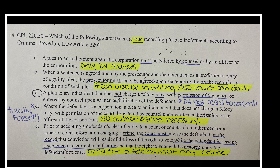Which of the following are true regarding pleas to indictments? A plea to an indictment against a corporation must be answered by counsel only. Where a sentence is agreed upon by the prosecutor and the defendant as a predicate to entry of a guilty plea, the prosecutor must state the agreed-upon sentence orally on the record — but it can also be in writing and the court can also do it, which is why that was wrong. A plea to an indictment that does not charge a felony may, with permission of the court, be entered by counsel upon written authorization of the defendant. So if the indictment charges a misdemeanor, counsel can possibly take the plea — but it needs permission of the court.